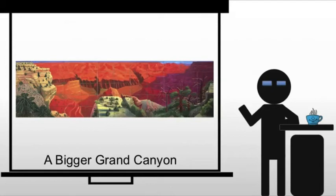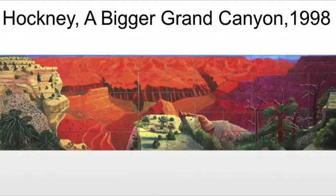He also creates a bigger Grand Canyon. Hockney begins photographing the Grand Canyon in 1982, aiming to photograph the unphotographable — which is to say, space.